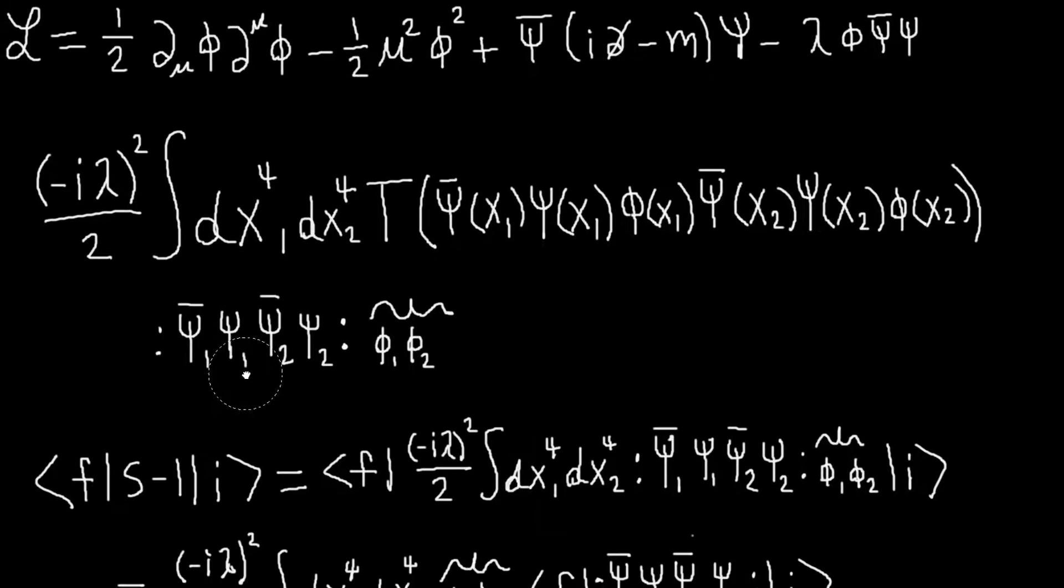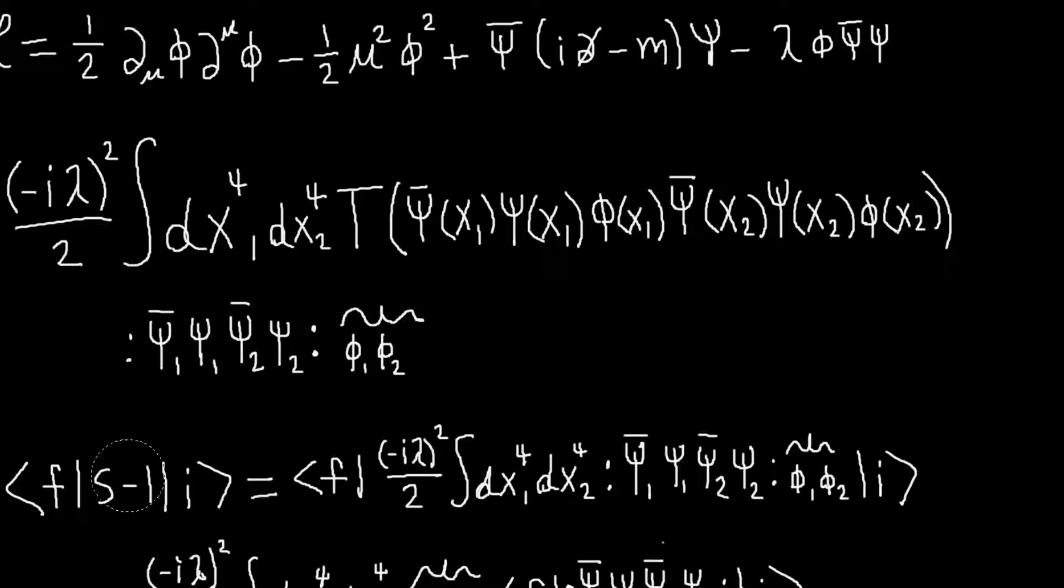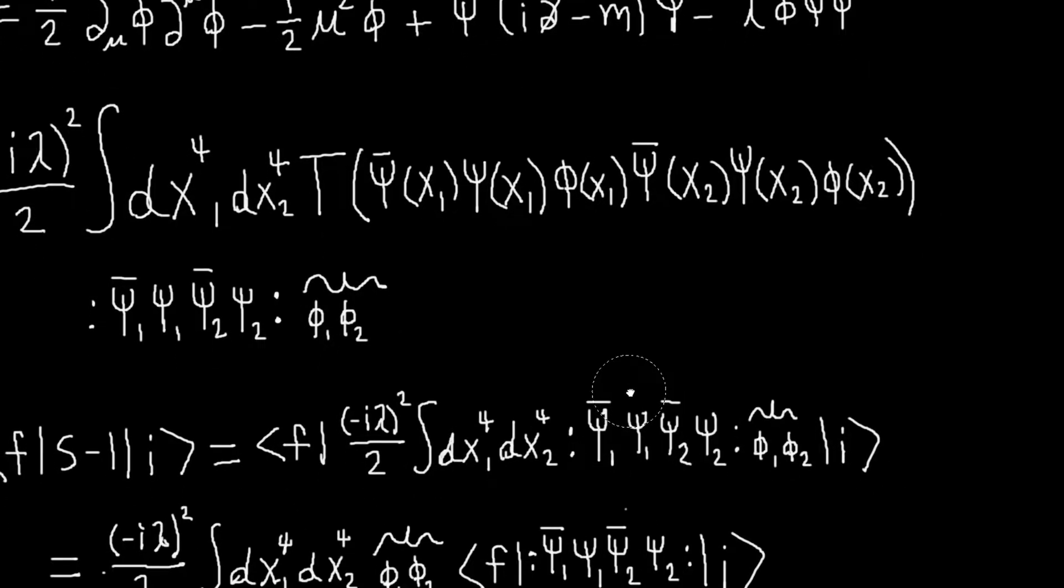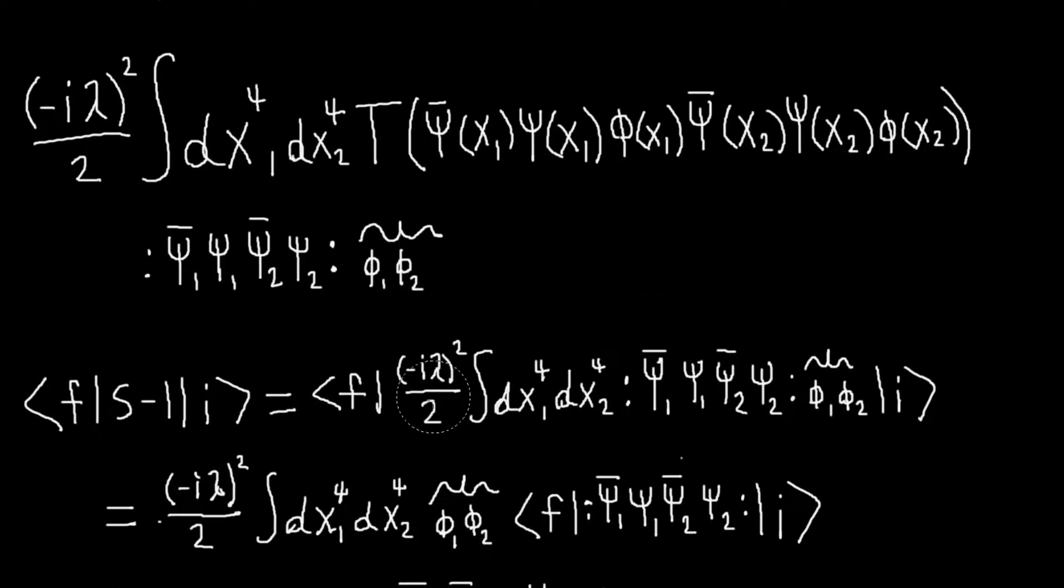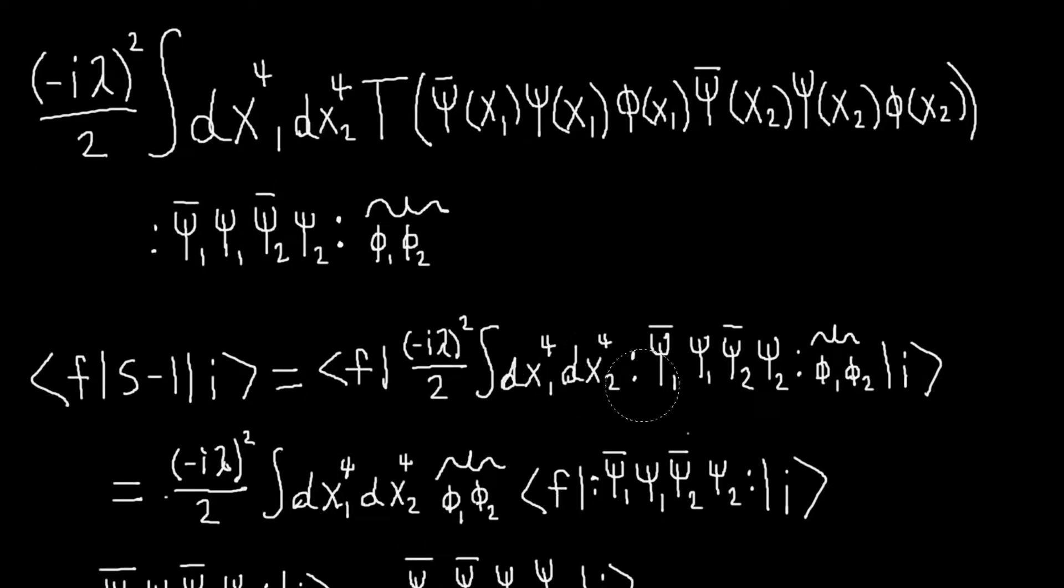And so we do S minus one just because we just want to know the probability that the particles scatter off each other. So this will just be this, so I just plug this in, and I can pull out the integrals here, and this contraction, and so I need to work out this thing, just like before.